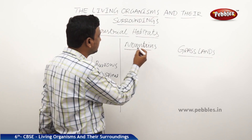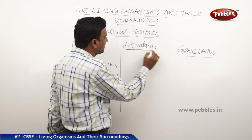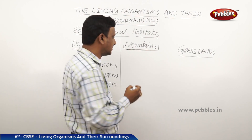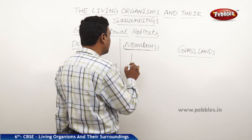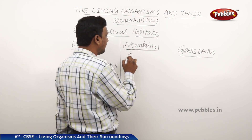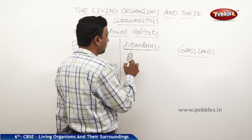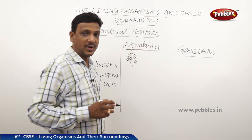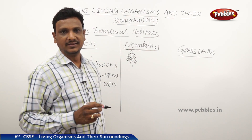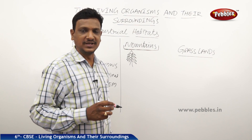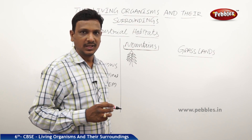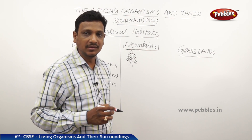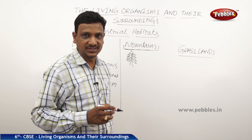Now let us see the mountains. In case of mountains, we see the plants and trees that are specially shaped. I told you that they have a shape of this particular kind. So why this kind? When there is heavy rainfall and snowfall, the snow should not stay on the branches of the tree.